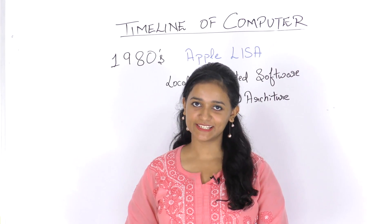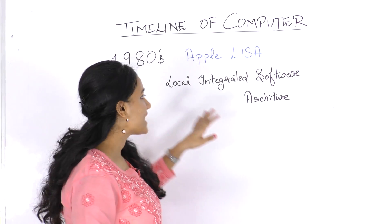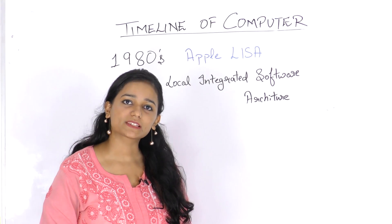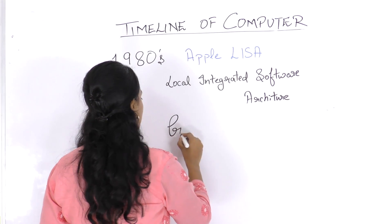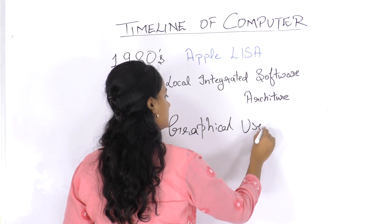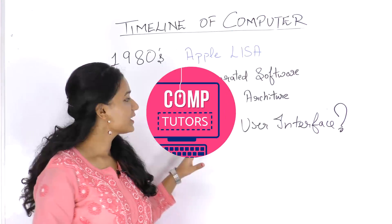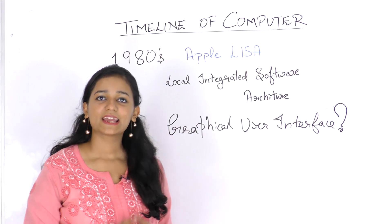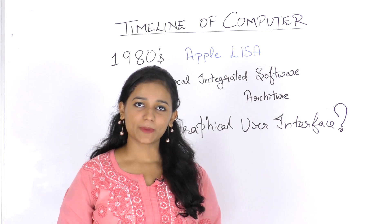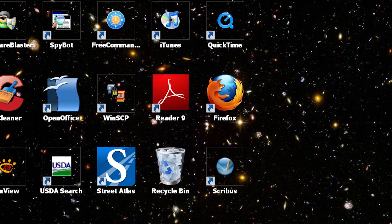In the 1980s, Apple introduced LISA — Local Integrated Software Architecture — which was the first computer to use a Graphical User Interface. GUI is an interactive mechanism that enables users to interact with electronic components of computers in a much easier way by providing icons and graphical visuals.